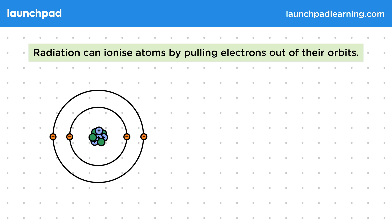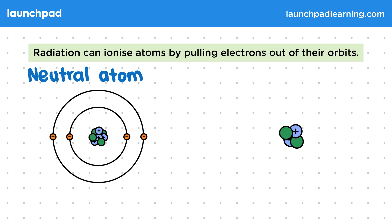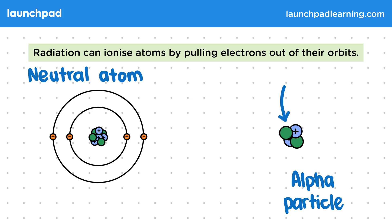A neutral atom has electrons which orbit a central nucleus. An alpha particle consists of two protons and two neutrons, and it can be released by an unstable nucleus. The alpha particle has a strong positive charge, as it has two positive protons with no electrons to cancel them out.